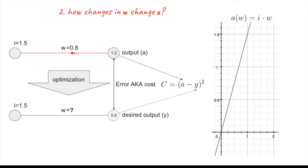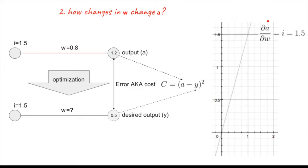Now, what about W? Remember, this is the only variable in the network. How do changes in W change A? We know that the activation is defined as I times W, so the rate of change is 1.5 — the input value. When W changes, the output activation changes by that same amount times 1.5. So 1.5 is the rate of change.